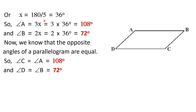So angle A equals 3x equals 3 times 36 equals 108 degrees, and angle B equals 2x equals 2 times 36 equals 72 degrees. Now for angles C and D: opposite angles of a parallelogram are equal, so angle C equals angle A equals 108 degrees, and angle D equals angle B equals 72 degrees. When the ratio of two adjacent angles is given, we can find all four angles of the parallelogram.